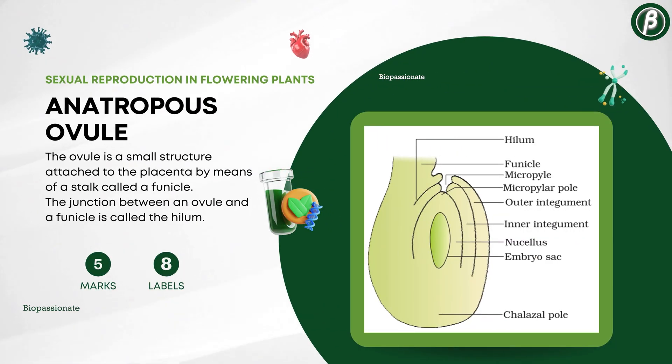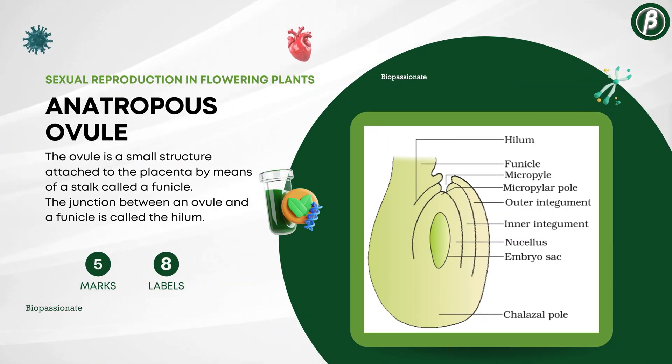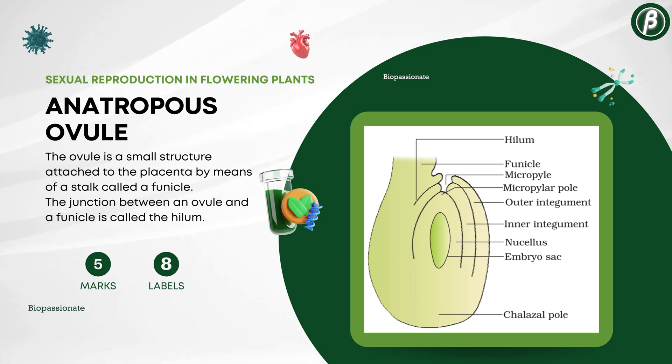Number 2: Structure of anatropous ovule, for 5 marks with a minimum of 8 labels.